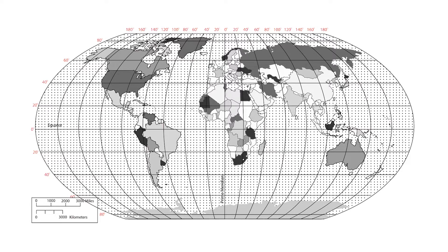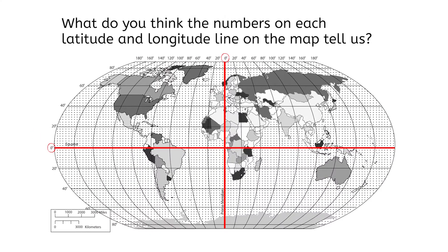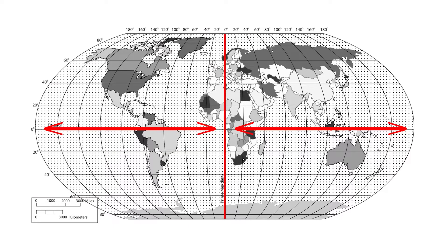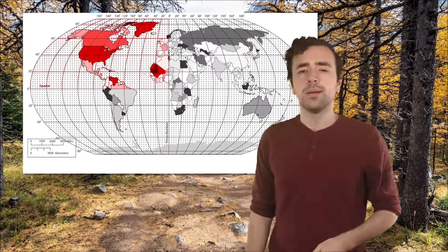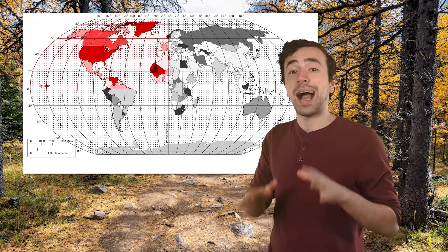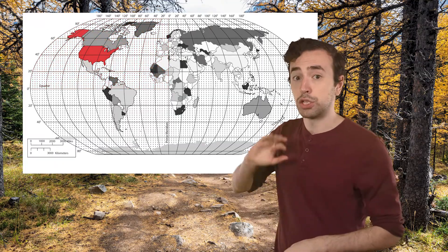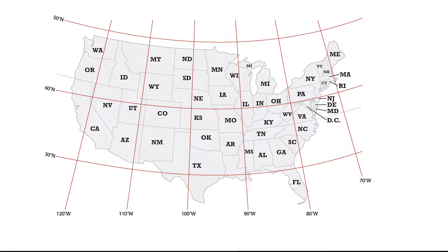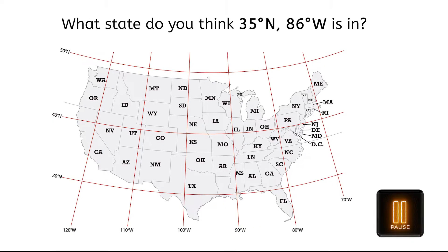Now notice how the lines on the map are numbered. The equator and the prime meridian are both labeled zero. The numbers on the other latitude and longitude lines tell us degrees of latitude — how far north or south from the equator — and degrees of longitude — how far east or west from the prime meridian. I'll give you another hint: I'm in the United States. Let's zoom in so we can see these lines a bit closer. I'm at 35 degrees north, 86 degrees west. What state do you think I'm in?